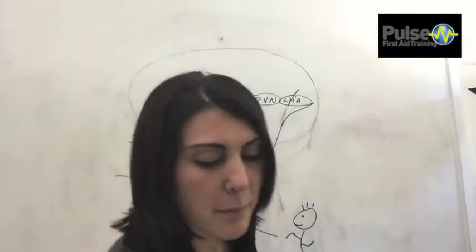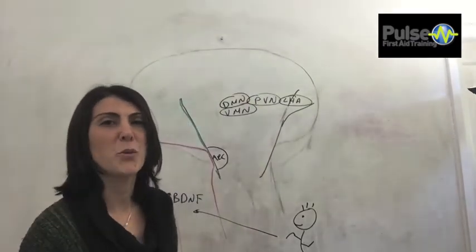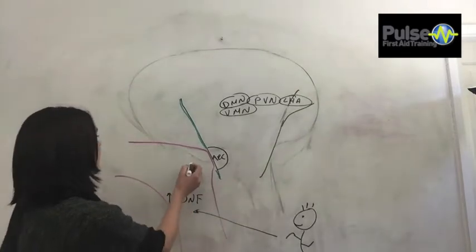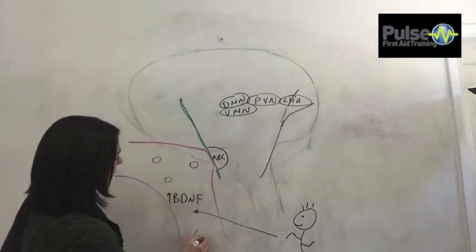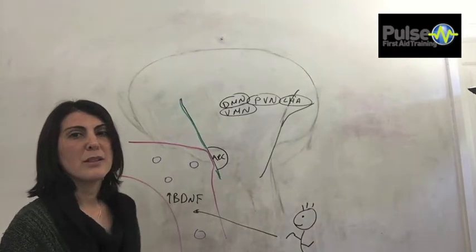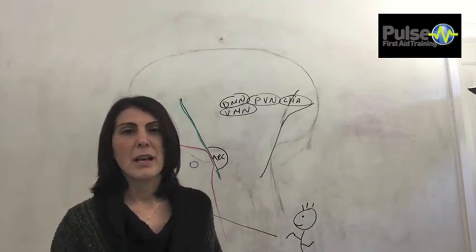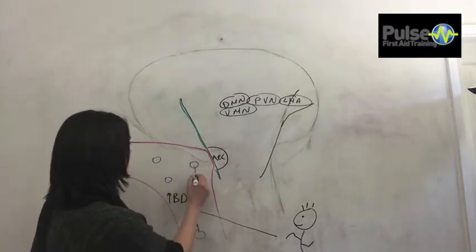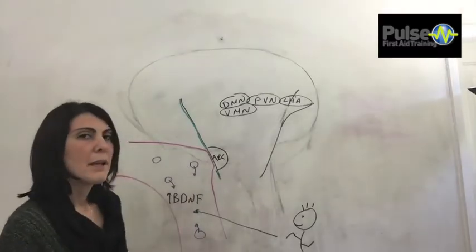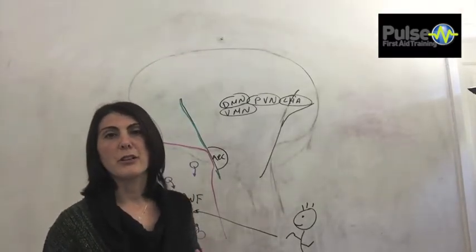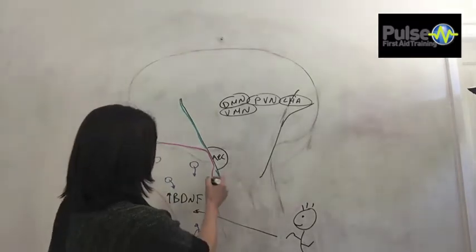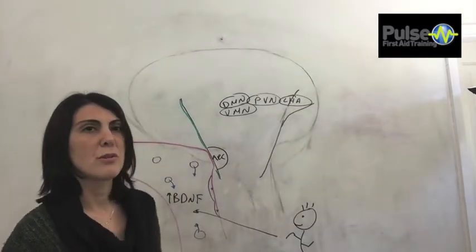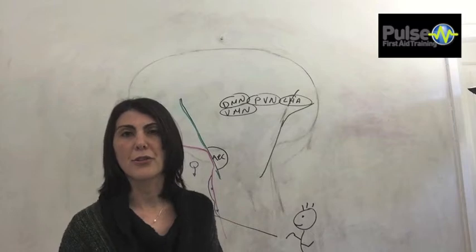There are certainly some suggestions as to where it might be coming from and one of them is through platelets. So platelets which are found within the blood have been shown to express brain neurotrophic factor and they have also been shown to secrete it into the circulation. So I guess platelets could well be responsible for this increase. Another possibility is endothelial cells. So endothelial cells are found in the lining of the vessels. These cells have also been shown to express and to secrete brain-derived neurotrophic factor.